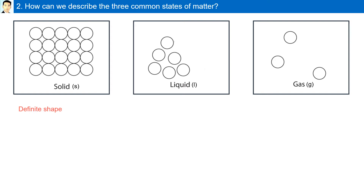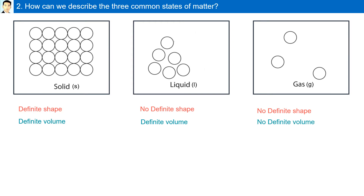Solids have definite shape and definite volume. Liquids have no definite shape — they take the shape of their container — however, the volume is definite. Gases, on the other hand, have no definite shape and no definite volume; they actually expand to occupy the entire container.